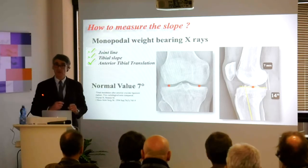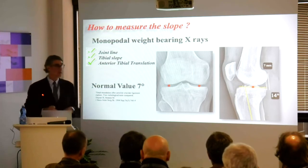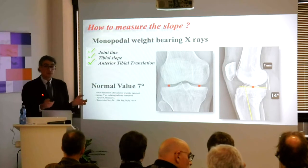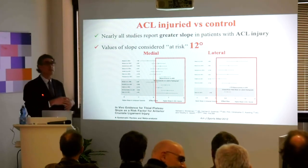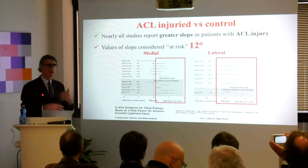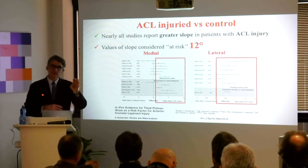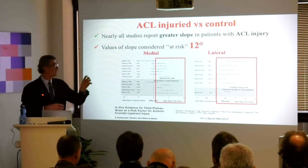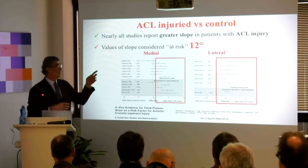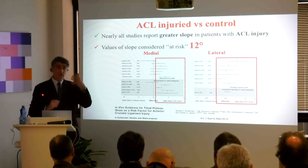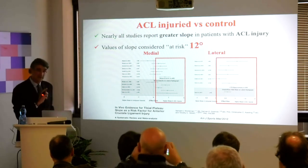The normal value of the tibial slope is 7 degrees. This patient has 14 — twice the normal — which is definitely abnormal. If you look at all the studies about tibial slope and ACL, you will see it is directly related to ACL tears. We have quite recent articles showing that the threshold for the tibial slope — the bad threshold — is 12 degrees. This is what we use as a value to correct the slope in revision cases, and it's what we published first. Pinczewski also recently published another article using the same threshold, showing that you have much more ACL tears if you are over 12 degrees.